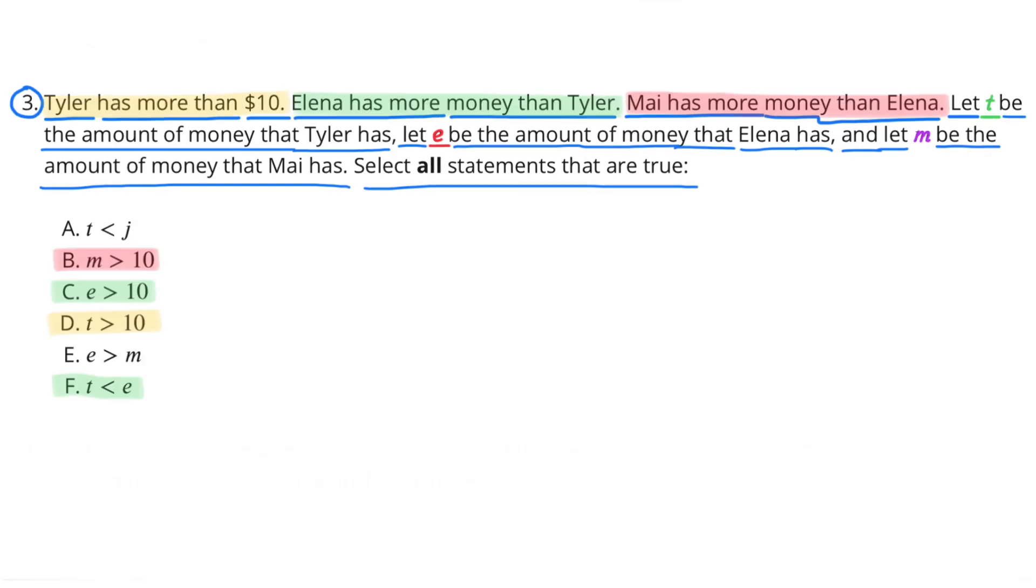I selected B: M is greater than 10, because Mai has more money than Elena, Elena has more money than Tyler, and Tyler has more than $10.